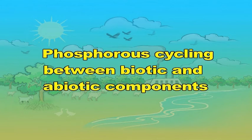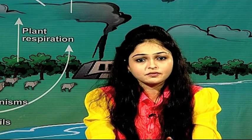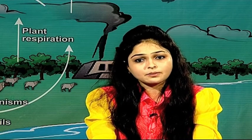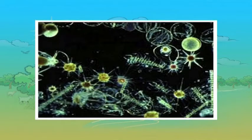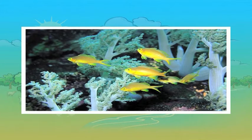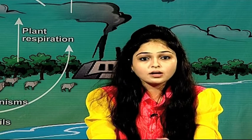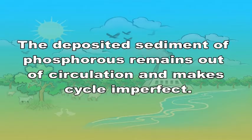Phosphorus cycles between biotic and abiotic components as follows. Plants absorb phosphorus from soil and via the food chain it becomes an integral part of different trophic levels. Both producers and consumers die, and decomposition returns phosphorus back to soil. Similarly, in the ocean, phosphorus from water passes to phytoplankton to zooplankton and from zooplankton to fishes. Excreta and death of marine organisms return phosphorus to water. A small amount of phosphorus is returned to the lithosphere from the ocean via marine birds' excreta known as guano. Deposited sediment of phosphorus remains out of circulation, making the cycle imperfect.